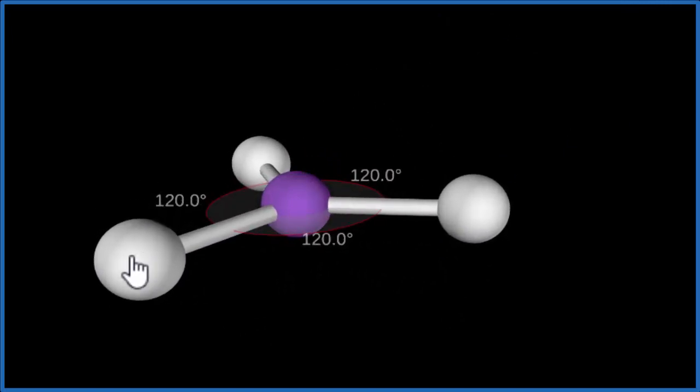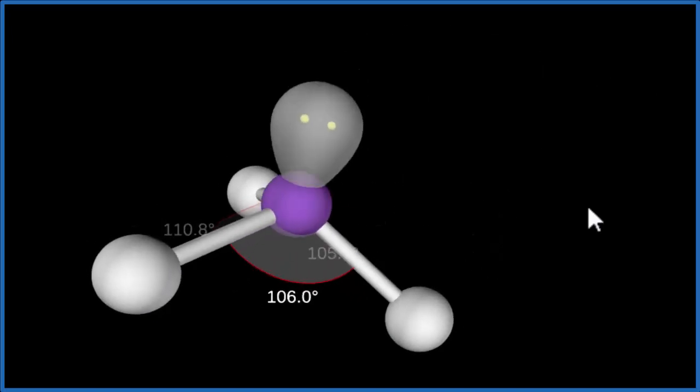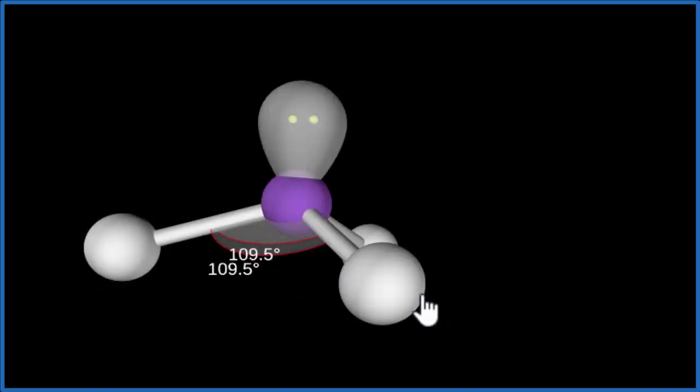But we have to remember that lone pair that was at the top of the H3O+ molecule. Let's put this lone pair up here, and you see how it pushes down the hydrogens. Now you have what's called a pyramidal molecular geometry, kind of like a pyramid.